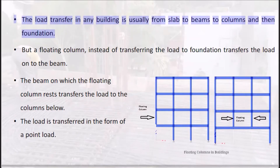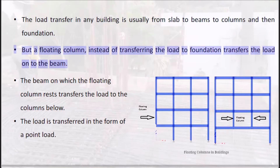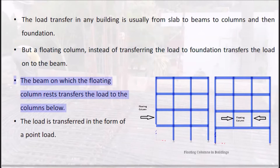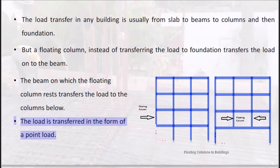The load transfer in any building is usually from slab to beams to columns and then to the foundation. But a floating column, instead of transferring the load to the foundation, transfers the load onto the beam. The beam on which the floating column rests then transfers the load to the columns below, and the load is transferred in the form of a point load.